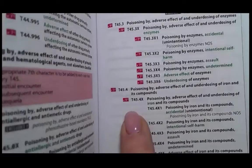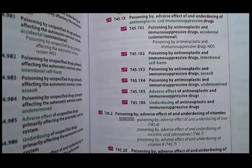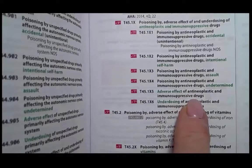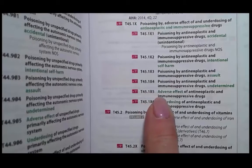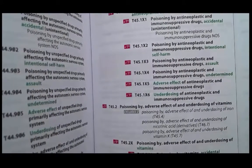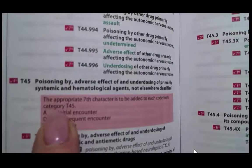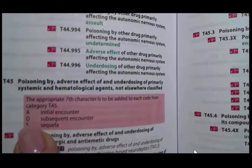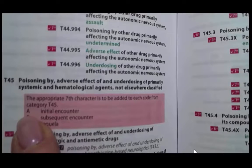And here we are — T45.1x5. T45.1x — adverse effect of anti-neoplastic and immunosuppressive drugs. Seven characters are needed, and our seventh character would be our encounter, which in this case is initial. If we go to the front of this chapter — chapter 19 — and go to the very beginning of our T45 category, we see instructional notes that the appropriate seventh character has to be added to each code from category T45: A being our initial encounter, D subsequent, and S sequelae. Our medical record documentation told us it is initial encounter, so our seventh character is A for this T45 code.